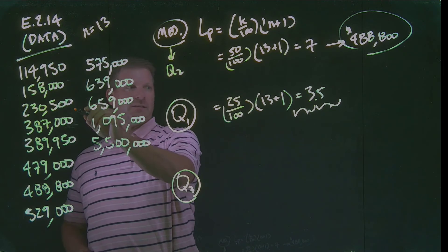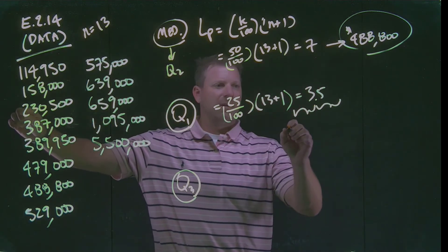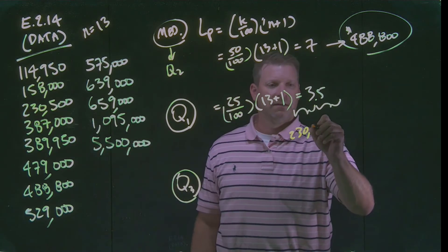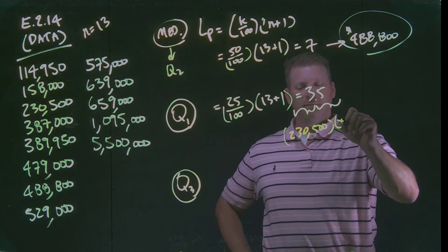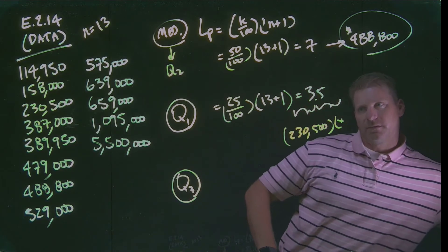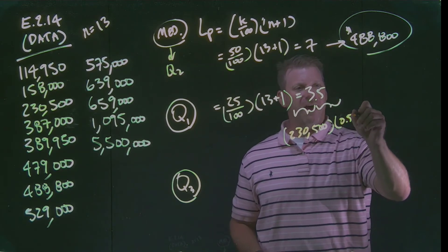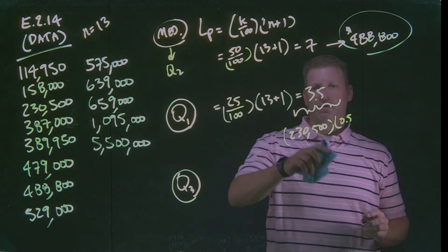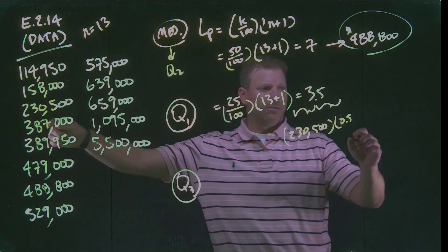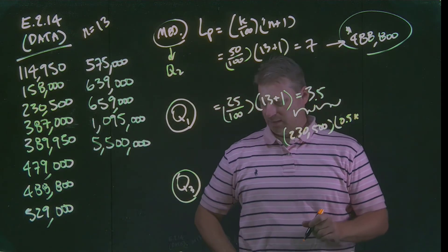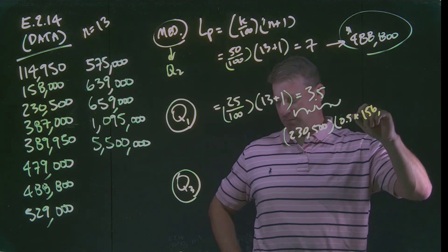So if I look at the distance between those two numbers, we're going to start off here at $230,500. And then we're going to go 0.5 of the distance between the $230,500 and the $387,000. So I'm literally going to go half of that distance. That distance is $156,500.